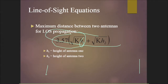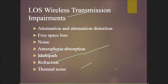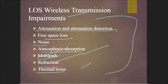Line-of-sight transmission impairments include: attenuation and attenuation distortion, free space loss, noise, atmospheric absorption, multi-path, refraction, and thermal noise. These are common impairments in wireless transmission.